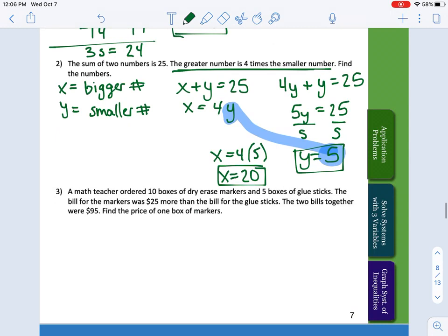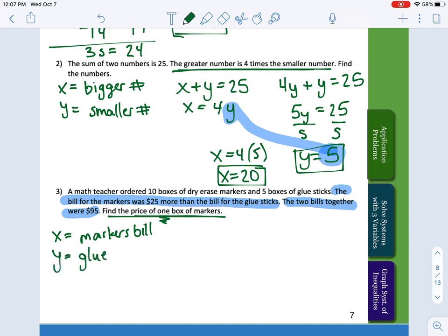One more of this type. A math teacher ordered 10 boxes of dry erase markers and 5 boxes of glue sticks. The bill for the markers was $25 more than the bill for the glue sticks, and the two bills together were $95. Find the price of one box of markers. I'm going to label my x variable being markers bill and my y variable is glue stick bill. So the bill for the markers was $25 more than the bill for the glue sticks, so x = 25 + y. We also know the two bills x + y had to equal $95.